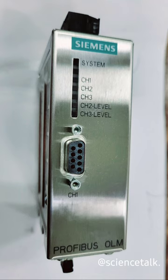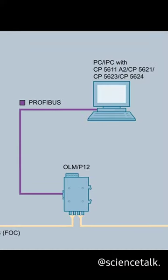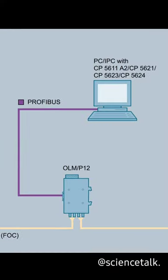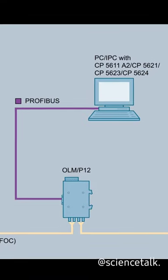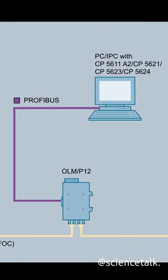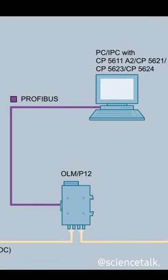Hi guys, this is Science Talk, and in this video we learn about OLM. OLM — Optical Line Monitoring — is used in optical fiber communication networks to monitor the performance of optical fibers and detect any faults or degradation in the signal.